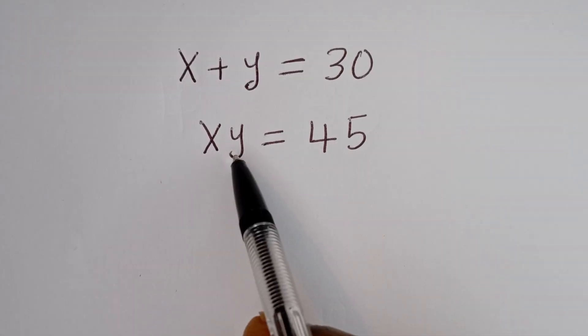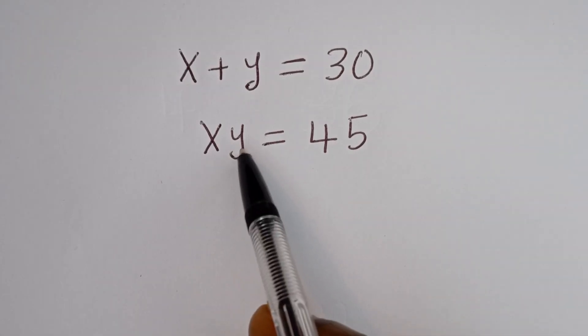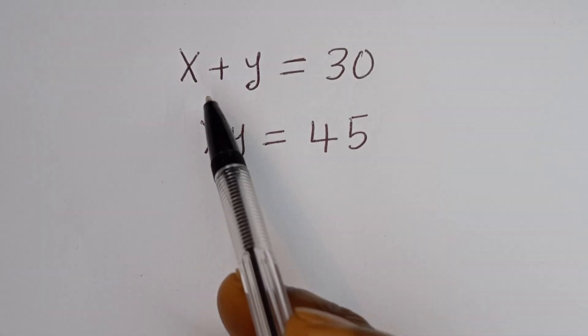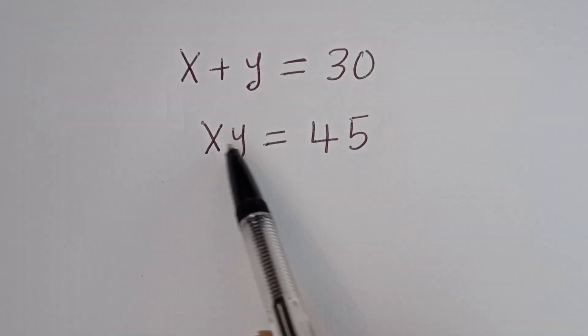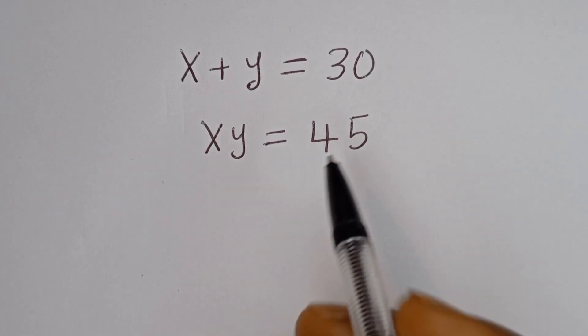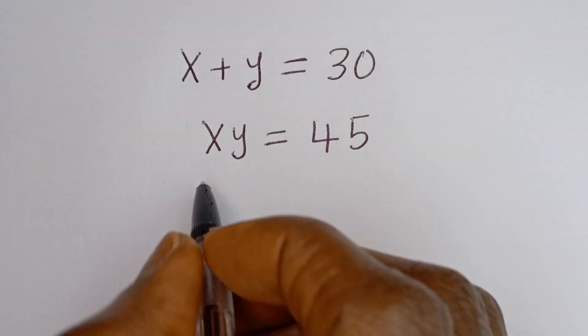Hello. How to solve for x and y in this equation: x plus y is equal to 30, and x times y is equal to 45. Solution.